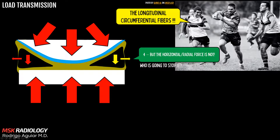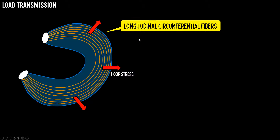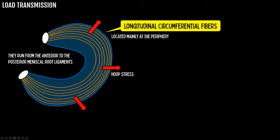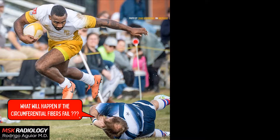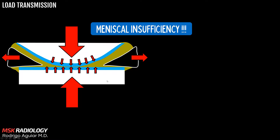The circumferential fibers neutralize the hoop stress and let the meniscus accomplish its functions. They run from the anterior to the posterior meniscal root ligaments, are located mainly at the periphery of the meniscus, and are formed by collagen type 1 fibers. They are the opposing forces against the hoop stress. If the circumferential fibers fail, meniscal insufficiency results — the meniscus will extrude and open the gates for osteoarthrosis.